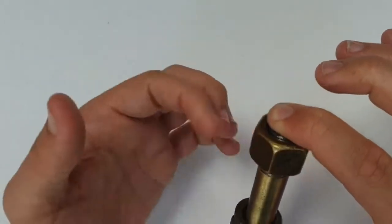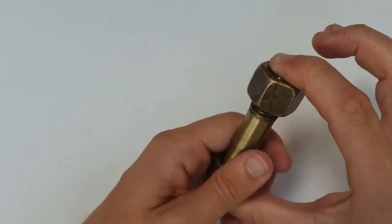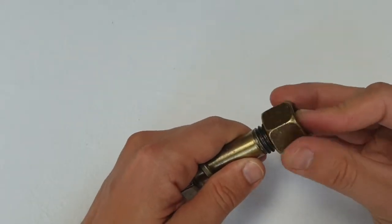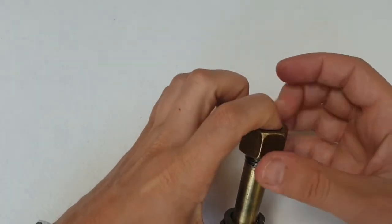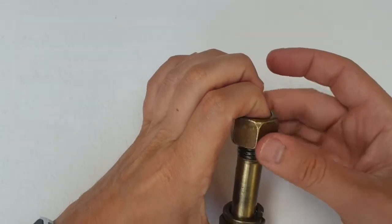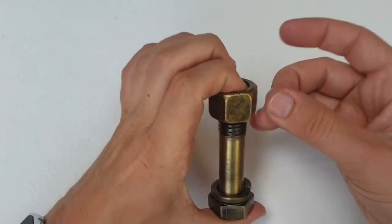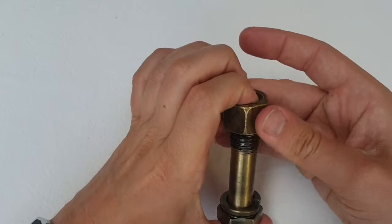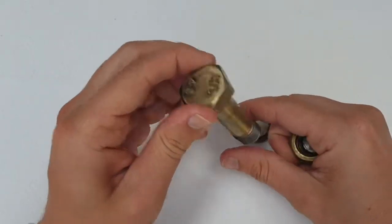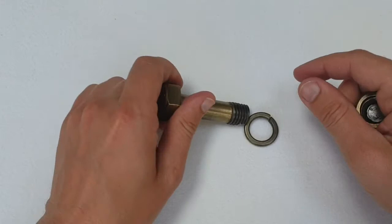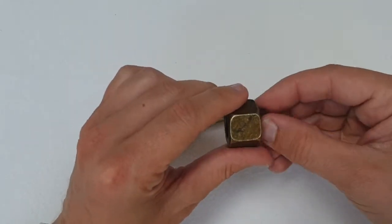You can see it's actually very easy just to unthread the nut, and our washer comes off.